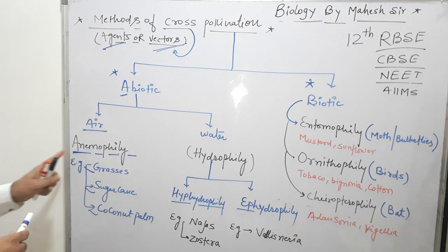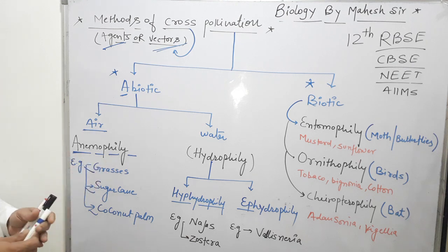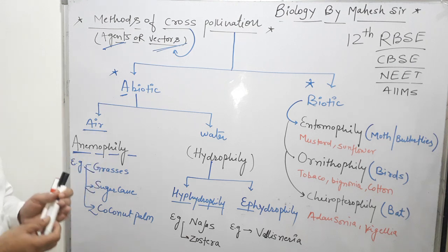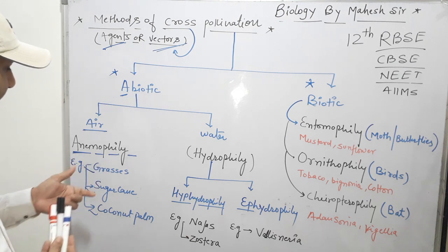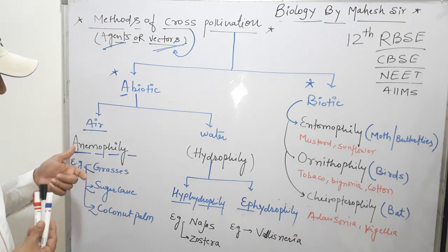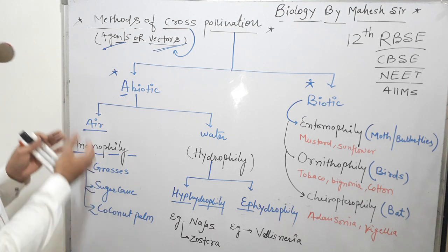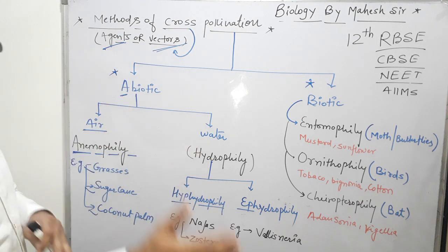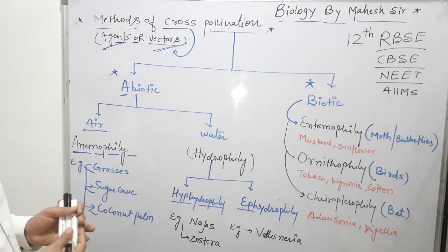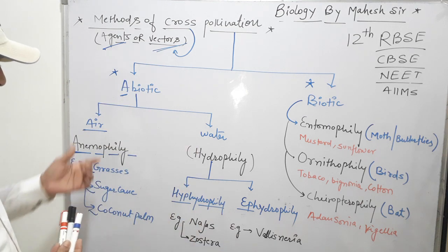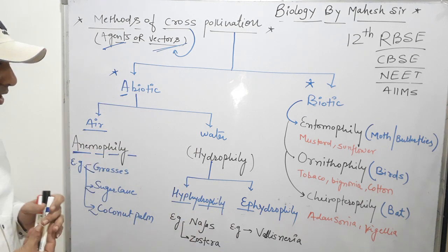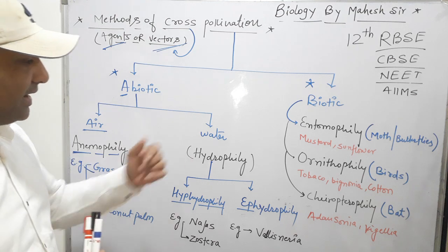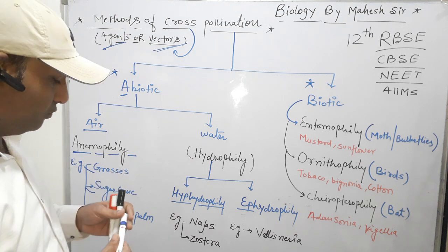In anemophily, high-pressure air releases the pollen grain from the mature anther and it travels to and lands on the stigma. This completes anemophily. The second abiotic agent is water.